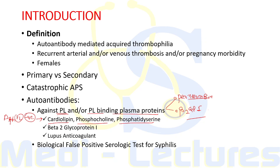When considering phospholipid-binding plasma proteins, the main antibody is directed against beta-2 glycoprotein 1. Domain 5 of beta-2 glycoprotein 1 interacts with the negatively charged phospholipid. There is also an autoantibody known as lupus anticoagulant, which prolongs clotting time in vitro, and this prolongation is not corrected by adding plasma.